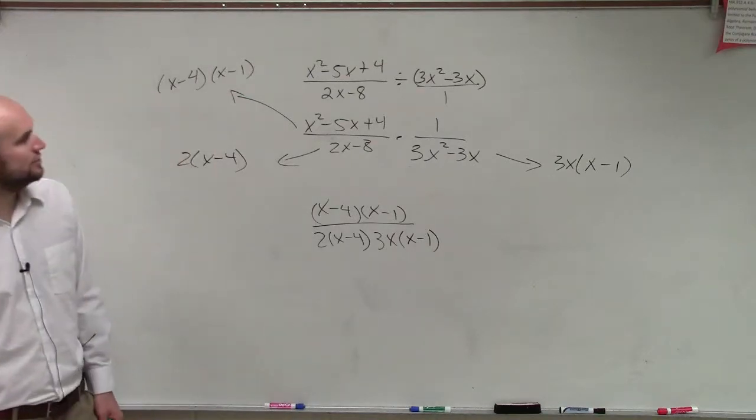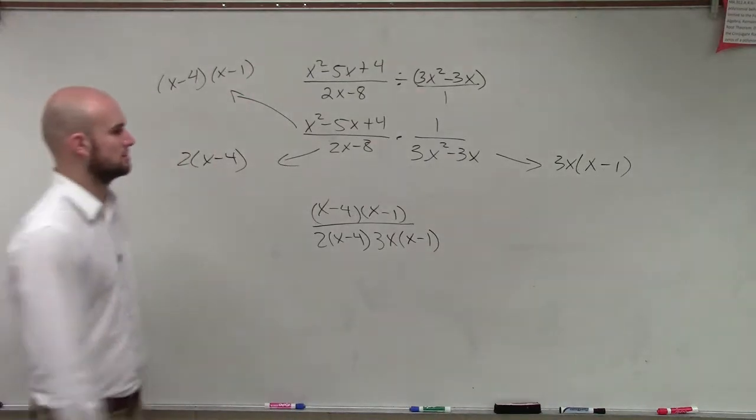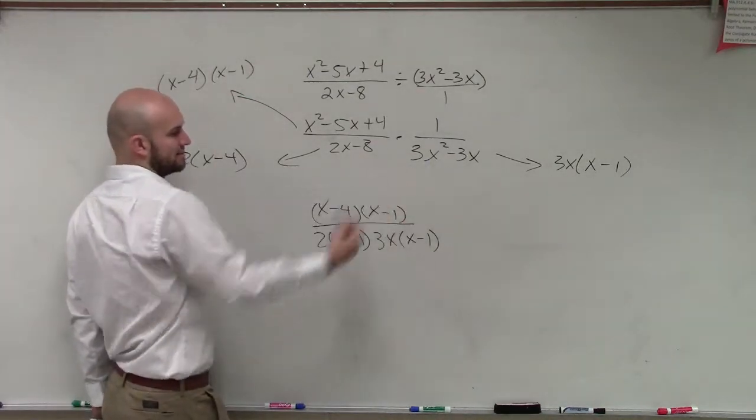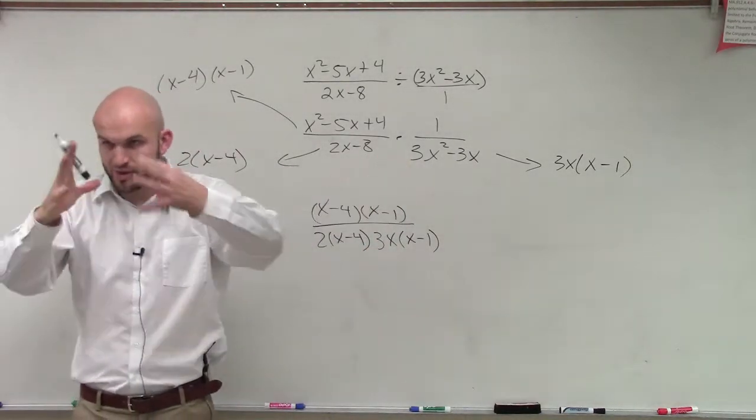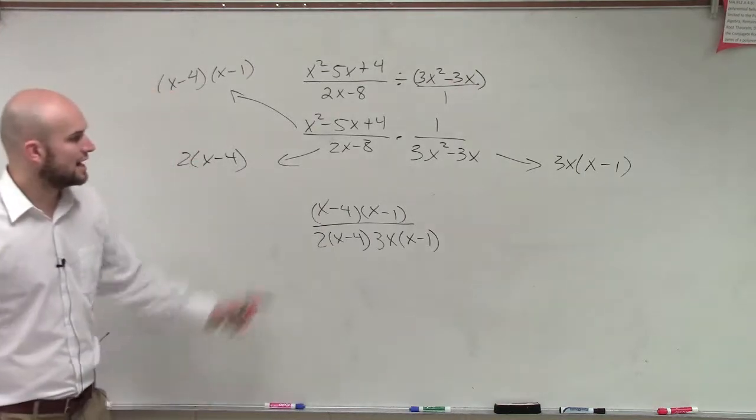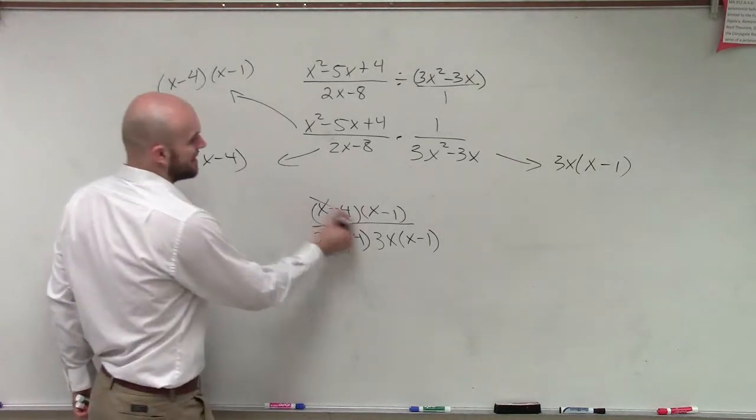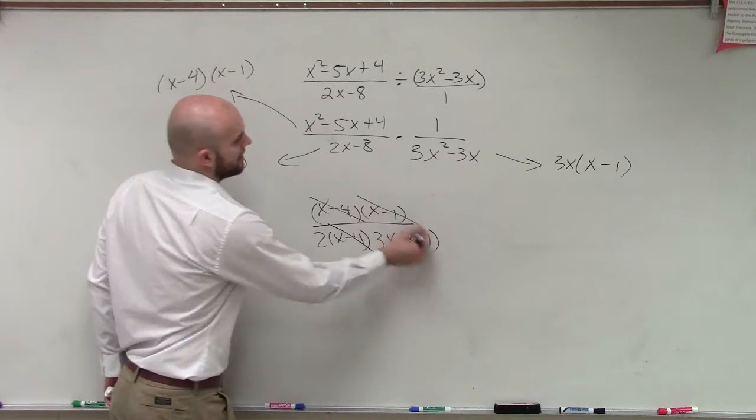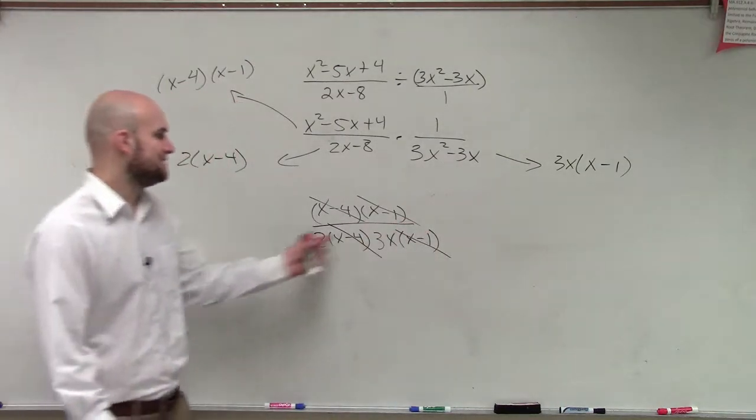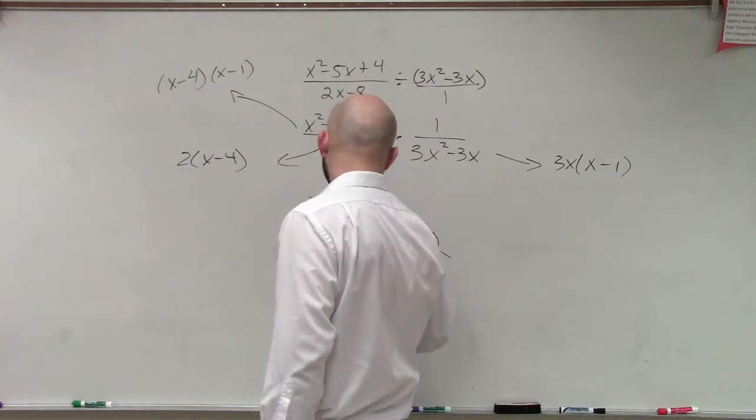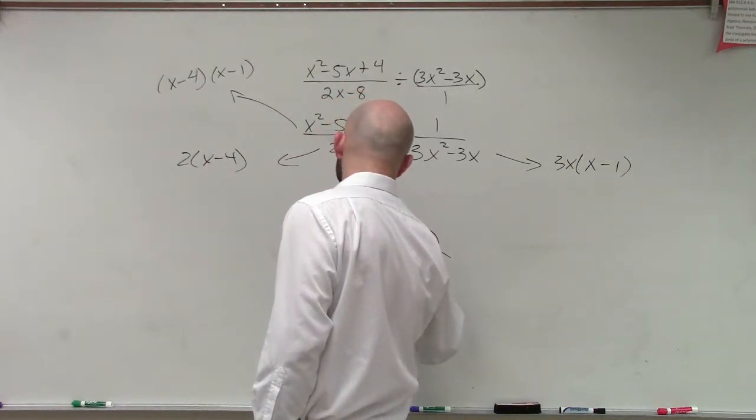Well, when you write it in that format, because this would be times 1 and they just multiply across. Remember, guys, when you're multiplying, they all just come together. You just multiply it all together, all right? So now, when you go and do this, you notice that x minus 4 divided by x minus 4, x minus 1 divided by x minus 1. And those all go to 1, leaving you with 1 over 6x.